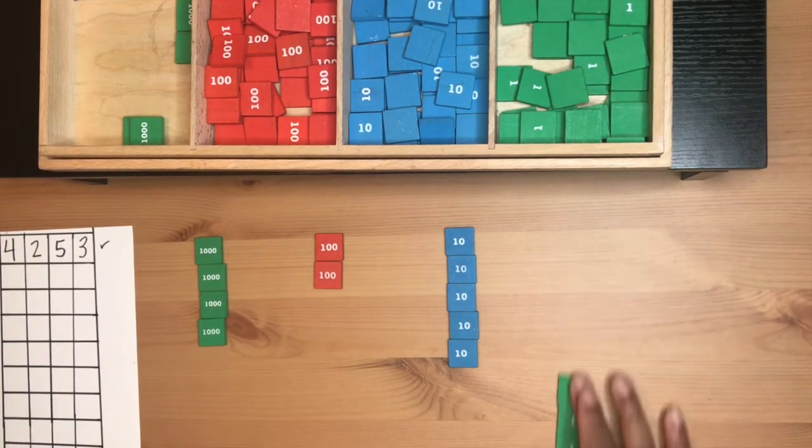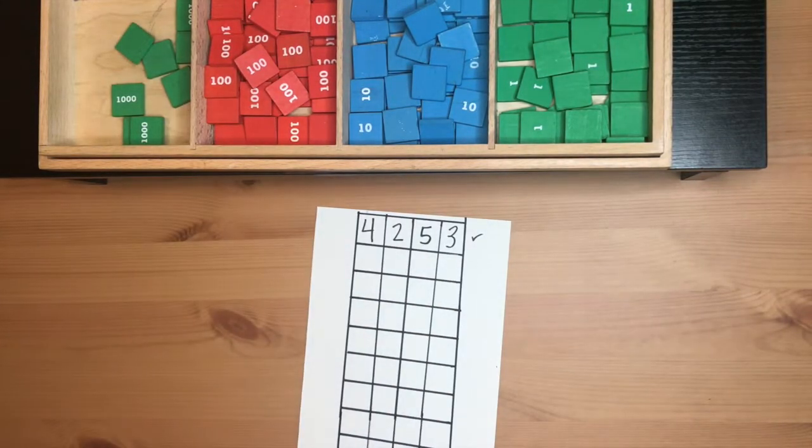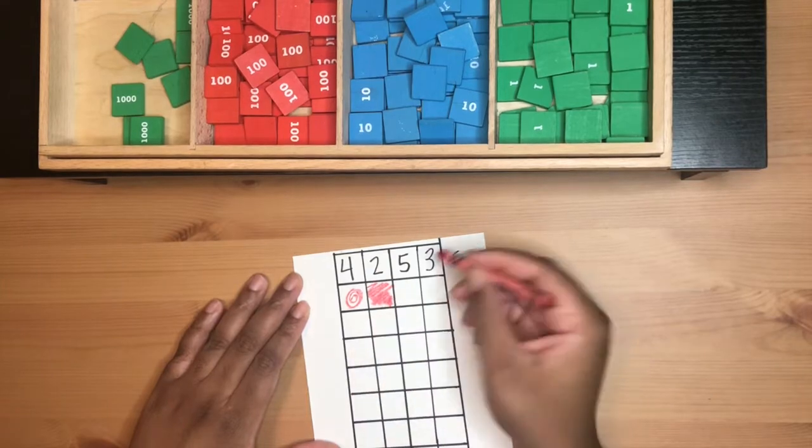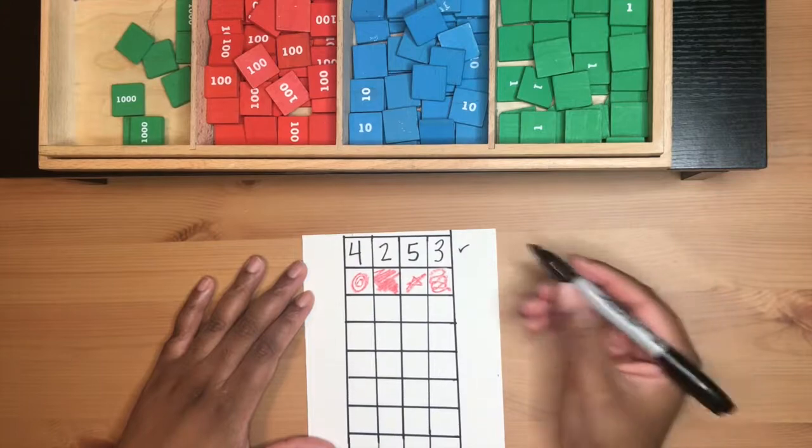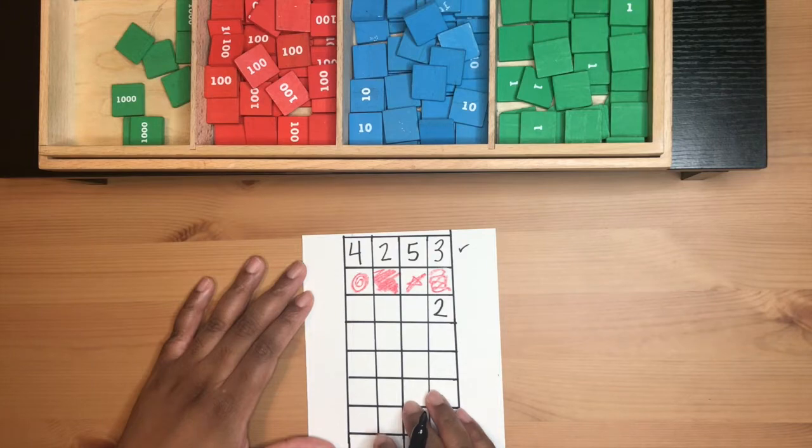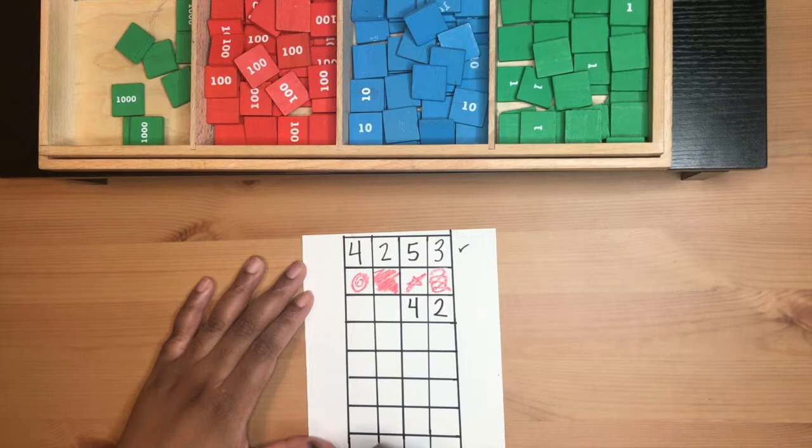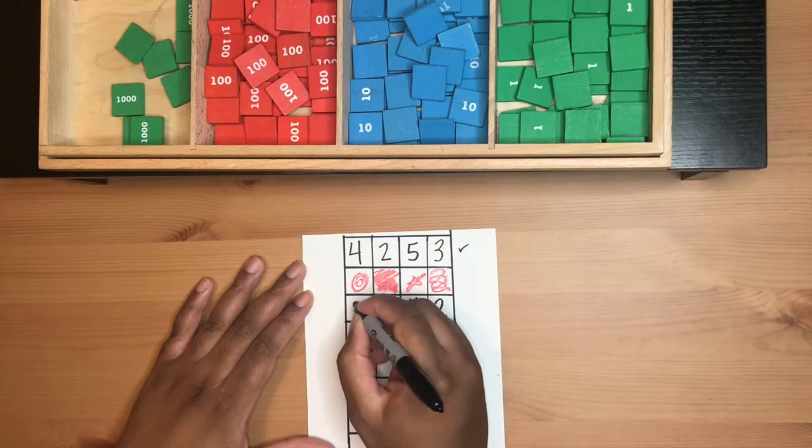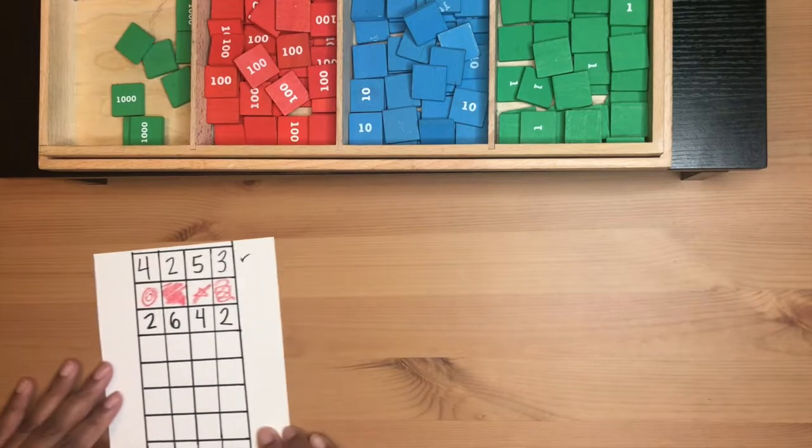We are done building. I'm going to put it with my stamps now. I'm going to choose numbers between zero and nine. I chose two units, four tens, six hundreds, two thousands. So now we build this number.